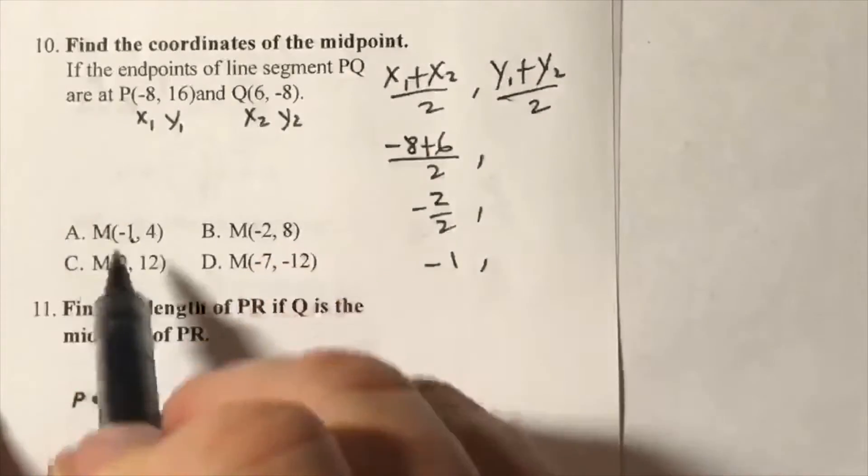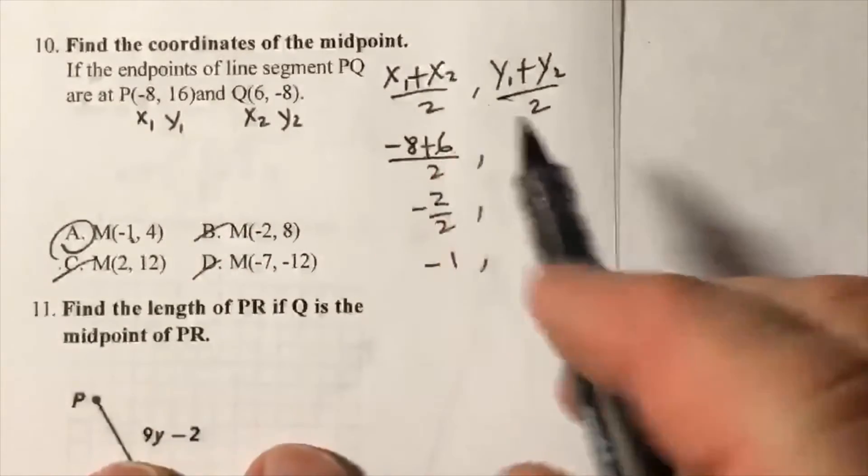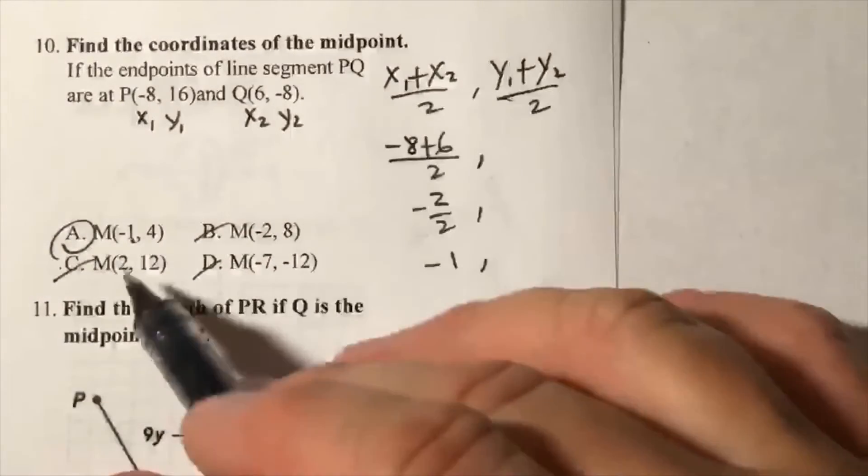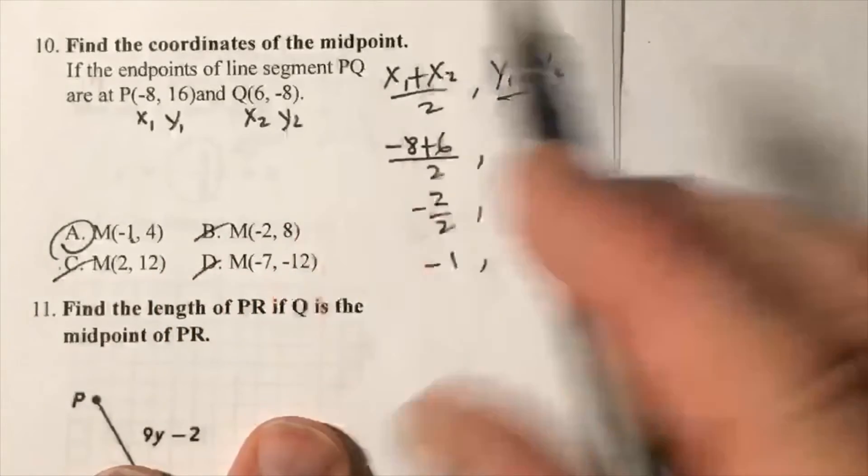choice there that has a negative 1 in the x-coordinate, which is A. Had there been another answer choice that had negative 1 in that slot, you would have to do the y's, which is 16 plus negative 8.